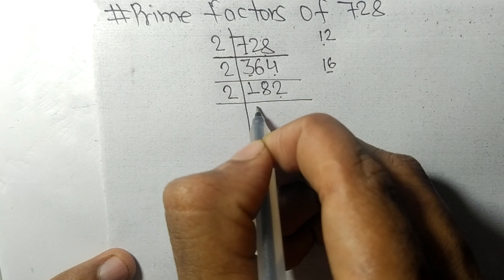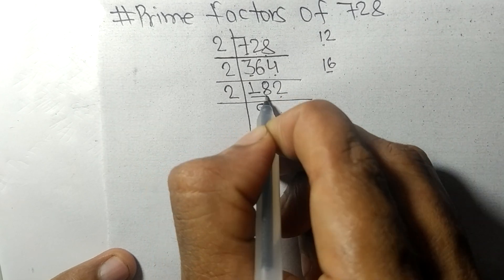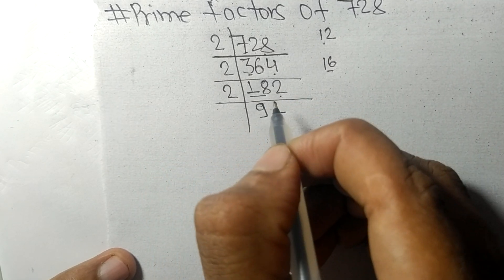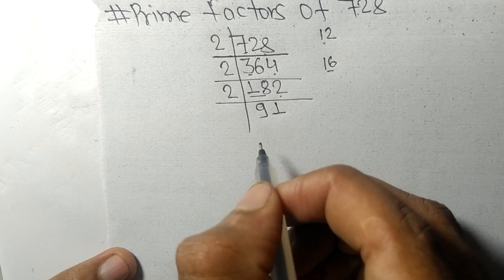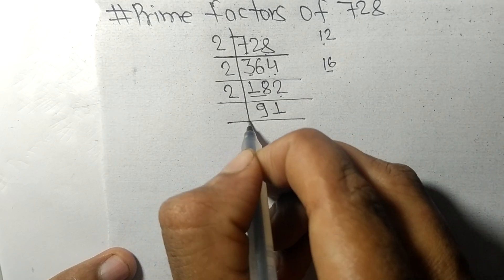2 times 9 is 18, 2 times 1 is 2. So now we got 91, which is exactly divisible by 7.